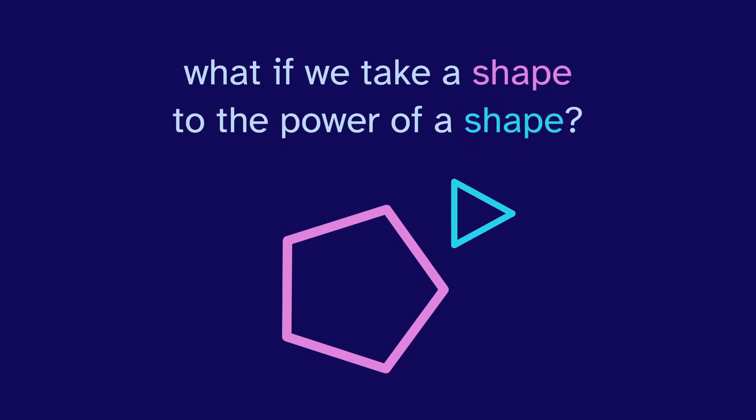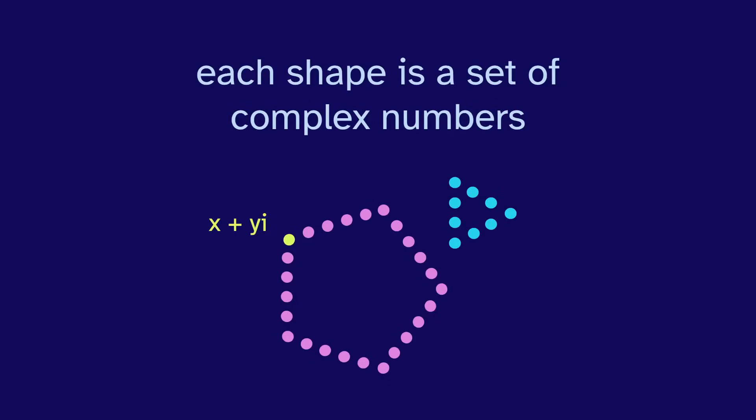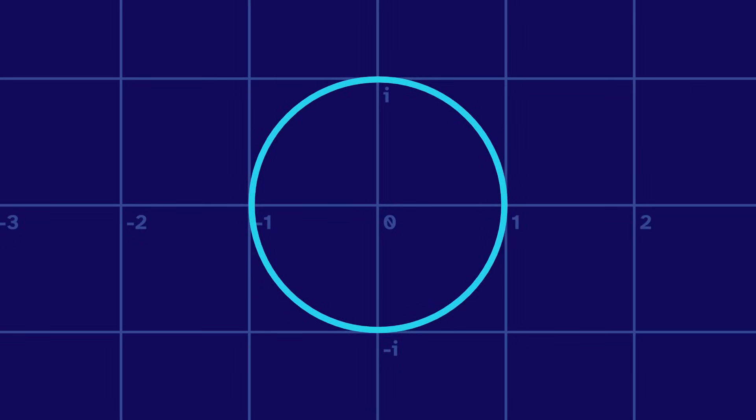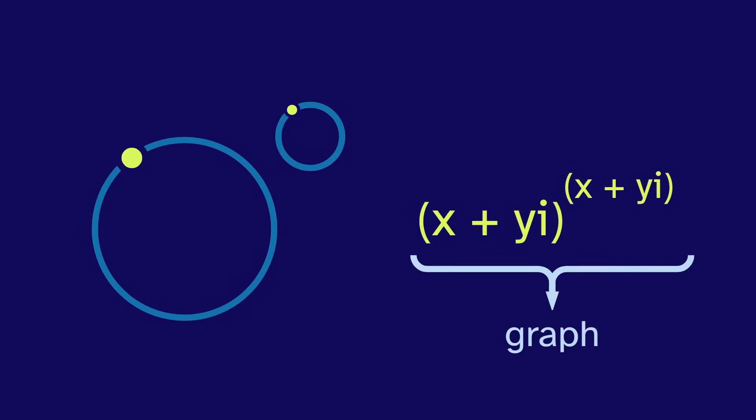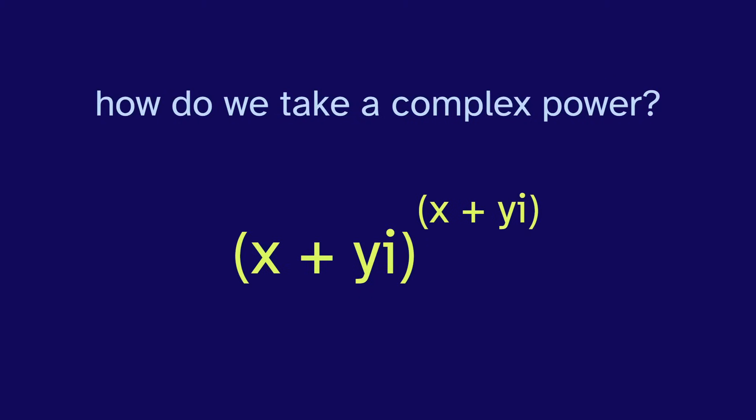So how do we do this? Each shape is a set of complex numbers. This circle is all the numbers x plus yi, where x squared plus y squared equals one. So if we want to take a circle to the power of a circle, we can take each of these numbers to the power of itself and then graph the output. We'll do this for every point on the circle. But what are the outputs? How do we take a complex power?